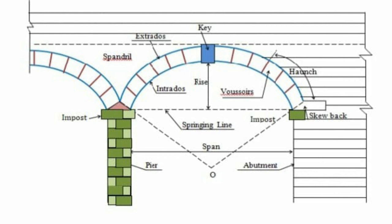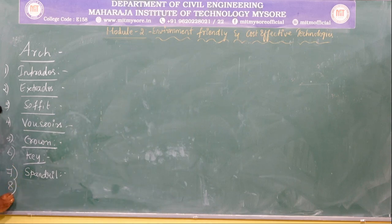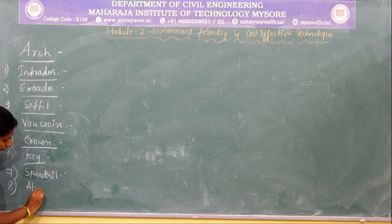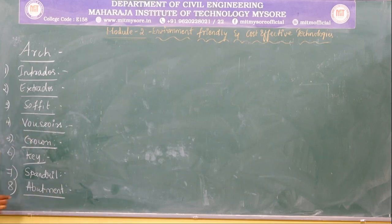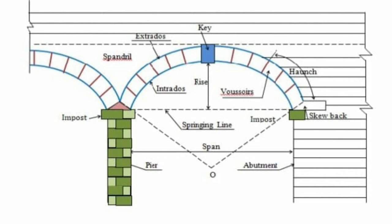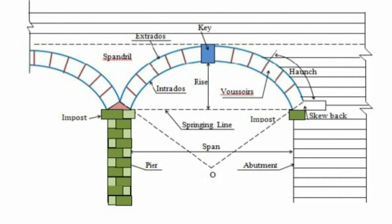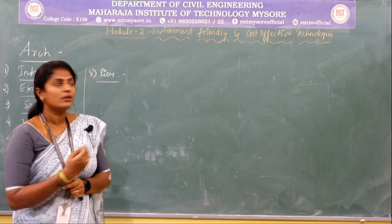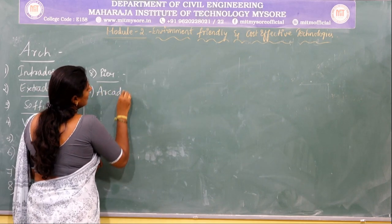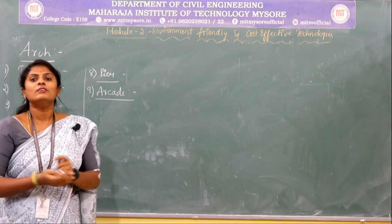Spandrel is the triangular portion formed between the extrados and the horizontal line drawn from the key. The next element is abutment — the end support of an arch. Next is pier, which is the intermediate support of an arch, especially the intermediate support of an arcade. An arcade is a row of arches.